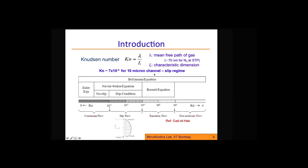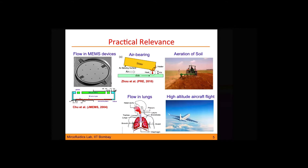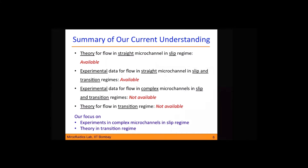These two regimes — slip and transition — form the focus of this work. For example, flow in a 10-micron channel of normal air falls in the slip regime. This type of flow is relevant practically: whether it is micro devices, flow of air in small pores of soil, flow in lungs, or flow at high altitude. In the last case — an aircraft — it is the mean free path that becomes very large because of the reduction in pressure.